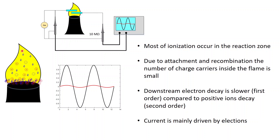Because of gas movement, charge carriers move throughout the flame, but due to attachment and recombination, their density decreases downstream. The density of electrons decreases with first order, and the density of positive ions decreases with second order. So the density of electrons is higher in the upper part of the flame. If current flows through the flame, it will mostly be carried by electrons due to their higher mobility.